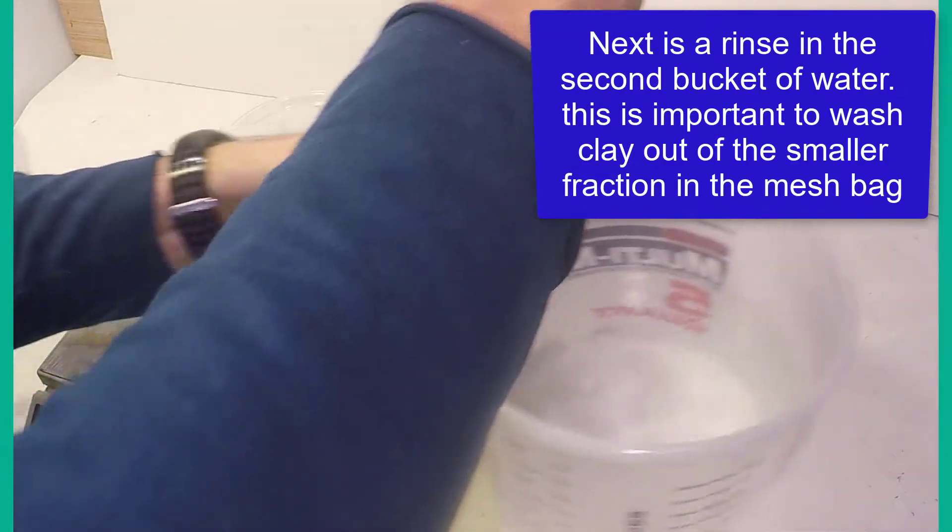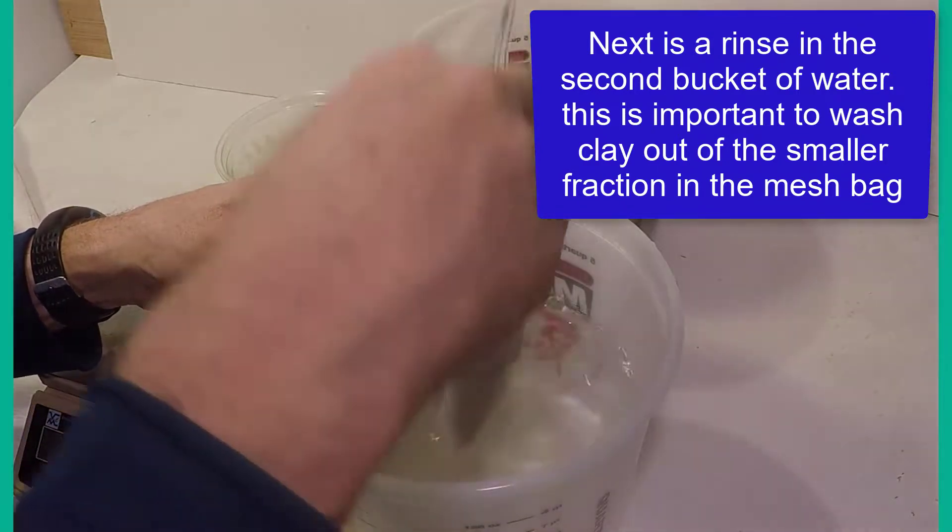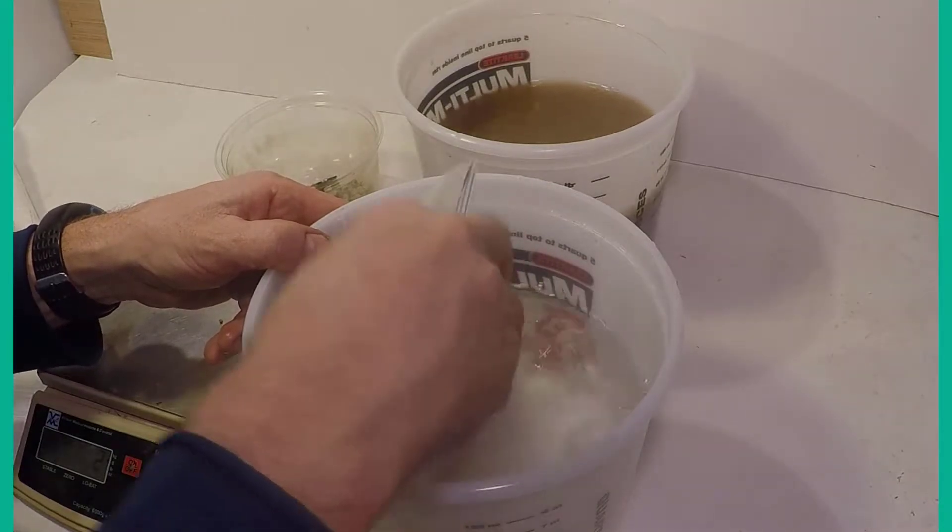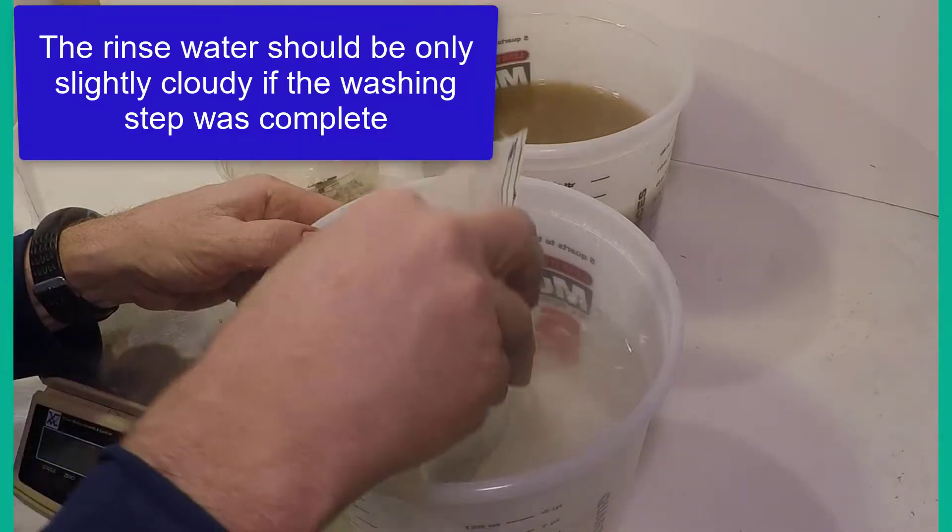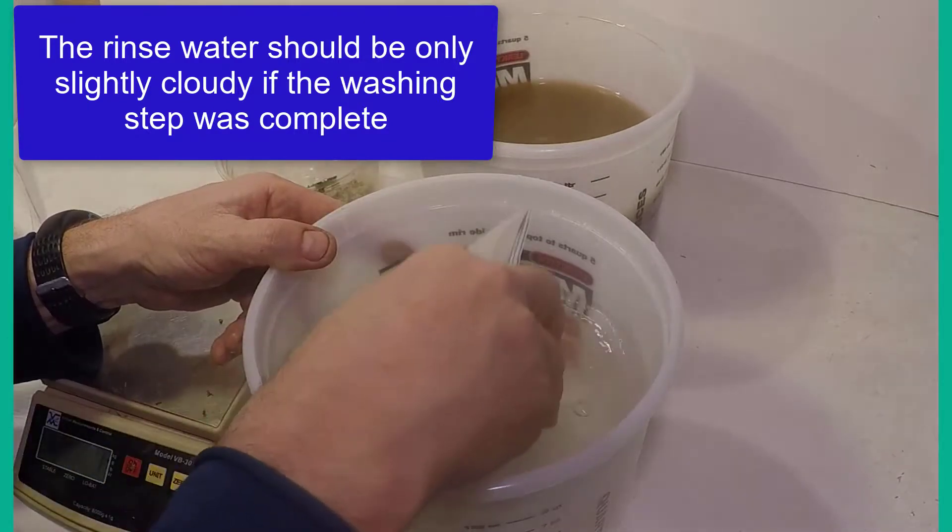After you are satisfied with the washing, the bottle and bag combination is rinsed in the second bucket. You should see only slight cloudiness released into the water, and should also see that the mesh bag now contains only sand and particles of organic matter.